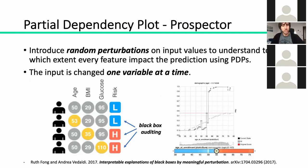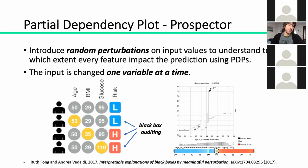Finally, I conclude this overview showing an example of a method for model inspection named Prospector, which is model agnostic. The idea is to introduce random perturbations in the input and test the classifier — in particular the probability of obtaining a certain class — by varying one variable at a time. For instance, we vary the variable age along all the distribution of values and observe if the black box answer is changing and what the probability of obtaining a different class is, so we can understand if and when there are changes in the performance.